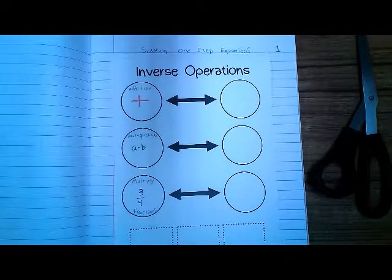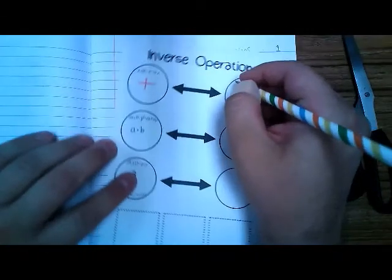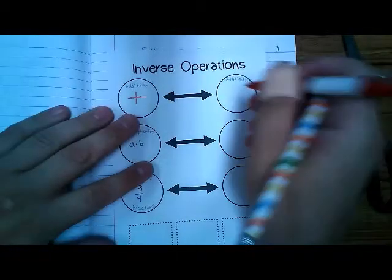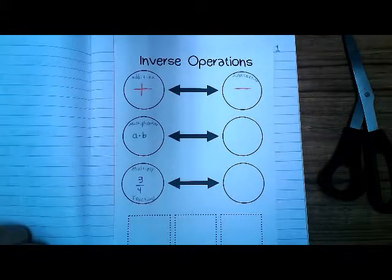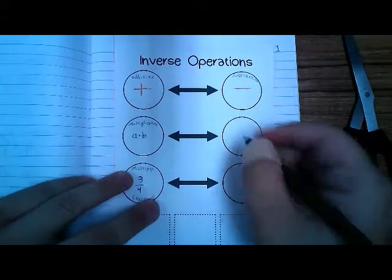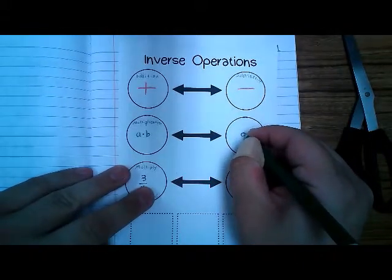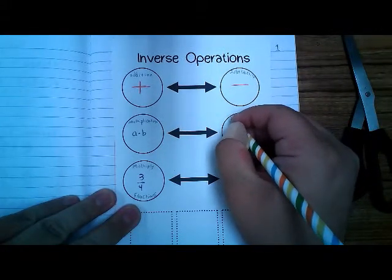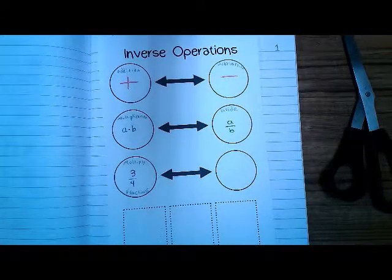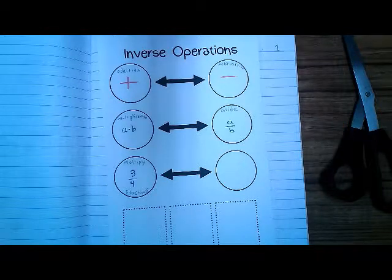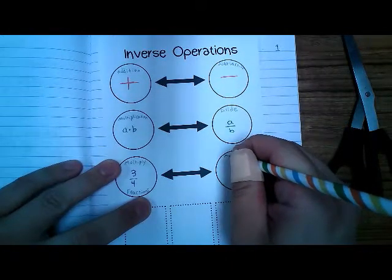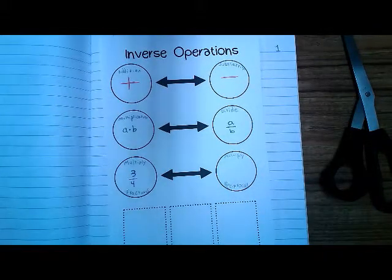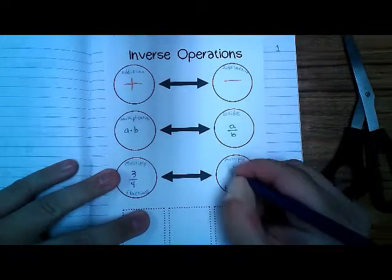Inverse means opposite. So what would the opposite of addition be? That would be subtraction — you're going to write subtraction here with a big subtraction symbol. The opposite of multiplying by a number would be dividing by a number, so that would look like a divided by b. And then the opposite of multiplying by a fraction — the opposite of multiplying by 3 fourths is to multiply by the reciprocal, which is 4 thirds.